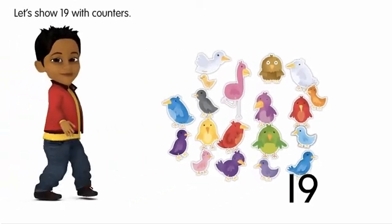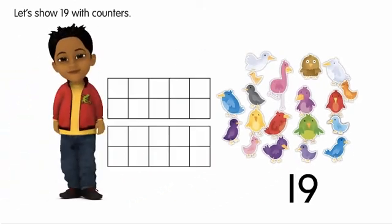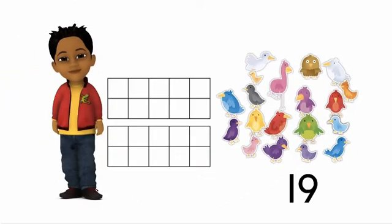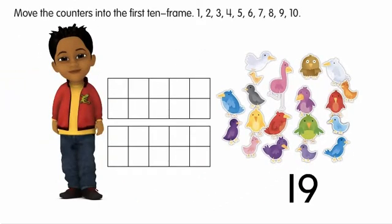Let's show 19 with counters. Move the counters into the first 10 frame. 1, 2, 3, 4, 5, 6, 7, 8, 9, 10.